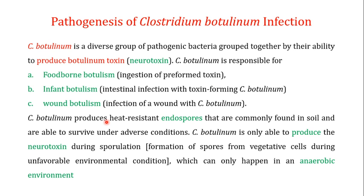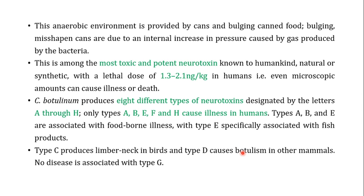C. botulinum endospores produce heat-resistant spores that are commonly found in soil and are able to survive adverse conditions. C. botulinum is only able to produce the neurotoxin — the botulinum toxin — during sporulation, which can only happen in an anaerobic environment. Sporulation is the formation of spores from vegetative cells during unfavorable environmental conditions.